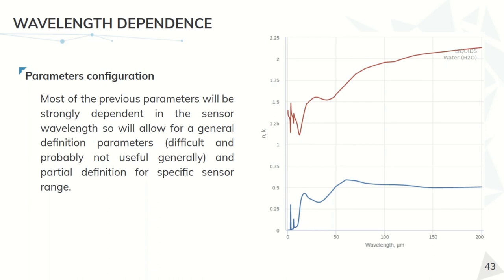One thing that we need to take into account is that all of these parameters that we have defined depend strongly on the wavelength of the radiation, and we need to take this into account. For this, we allow to define these parameters in a general way, but we consider that this is difficult and probably not useful generally, so we use a piecewise definition that can be tuned for specific ranges of the sensors needed.